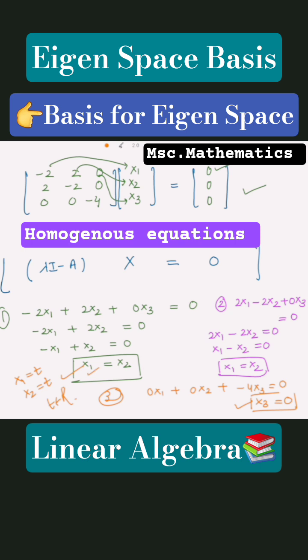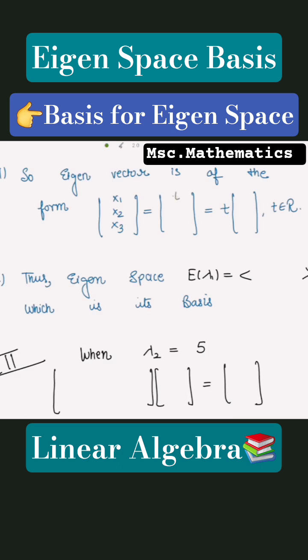So now writing the eigenvector for this, we have got the values of x1, x2, and x3. So x1 is t, x2 is also t, and x3 is 0. Taking t outside, we get 1, 1, 0.